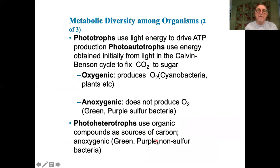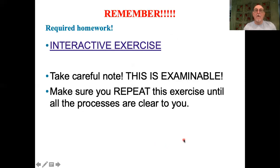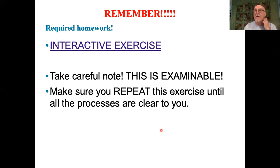There is a table which gives a good summary of the different metabolic diversity types: photoautotrophs, photoheterotrophs, chemoautotrophs, and chemoheterotrophs. Be able to distinguish between them — you don't need to know names of the bacteria, just know that these groups do exist. With that, I'm completing today's class. Please proceed to do this interactive exercise on photosynthesis carefully; it should be repeated several times until absolutely clear, as this is examinable. I will see you again next Wednesday.